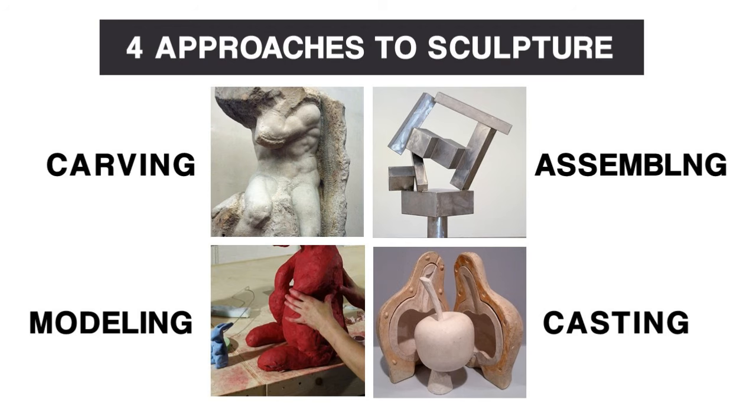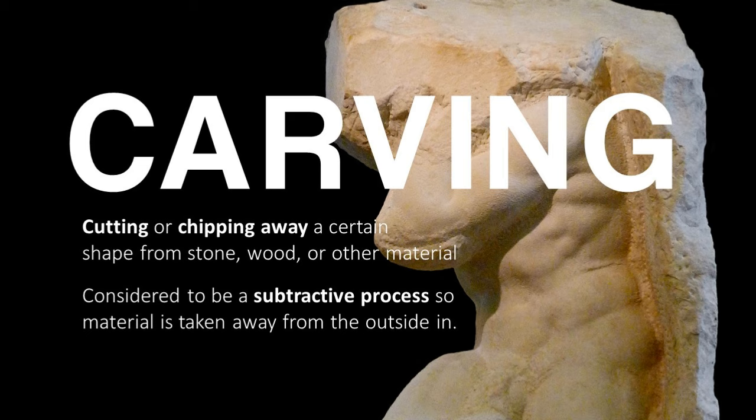Three-dimensional art is as ancient as two-dimensional art, and humanity has continued to sculpt forms for aesthetic delight and engagement. There are four different approaches to sculpture, sometimes depending on the media one uses. There is carving, which involves cutting or chipping away a certain shape from stone, wood, or other material. This is considered to be a subtractive process, so material is taken away from the outside in.